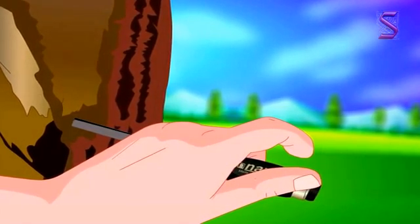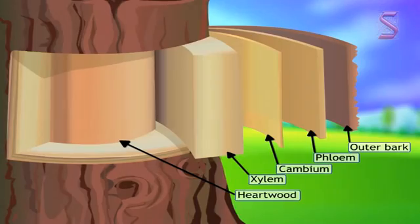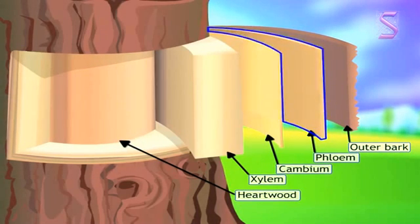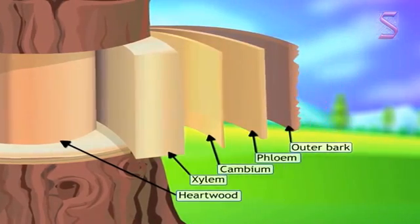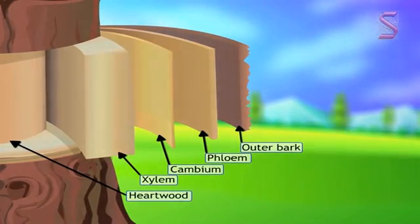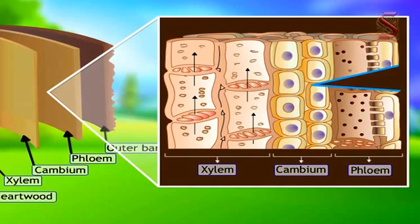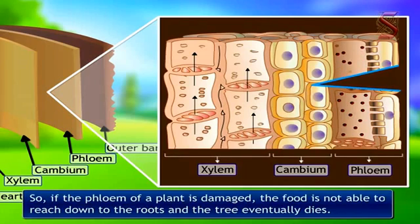We know that the conduction of sugars or food is done by the phloem. If we remove all tissues of a plant from the cambium outwards including the phloem and study the tissues above and below the ring, we will find out that food will only be present above the ring but not below it. Why? Because it couldn't go down because of the damaged phloem. The stem of the plant may also increase in thickness above the ring, but no growth will take place below it because the lower portion will be devoid of food. So if the phloem of a plant is damaged, the food is not able to reach down to the roots and the tree eventually dies.